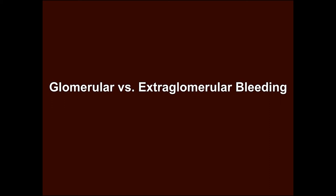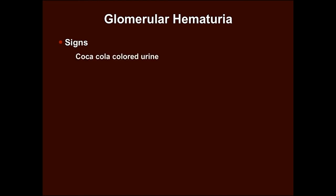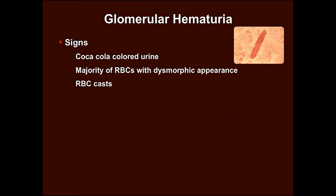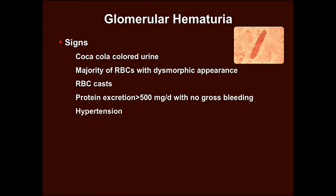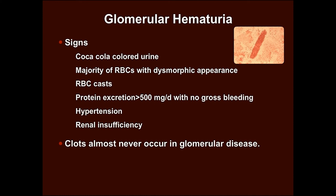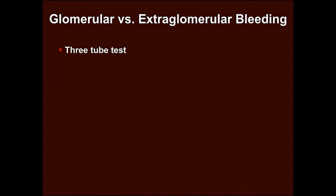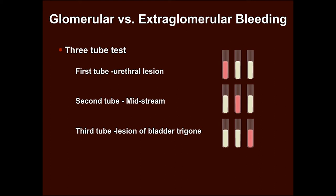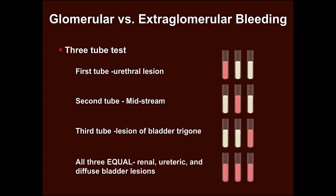It is important to decipher whether the bleeding is glomerular or extraglomerular. Signs that indicate glomerular hematuria are: presence of cola-colored urine, majority of RBCs showing dysmorphic appearance, presence of RBC cast, often associated with protein excretion with no gross bleeding, presence of hypertension or renal insufficiency. Blood clots almost never occur in glomerular disease. If you suspect glomerular hematuria, refer the patient to a nephrologist. A three-tube test may be useful: more bleeding in the first tube indicates a urethral lesion, the second tube suggests a midstream lesion, the third tube suggests a lesion of the bladder trigone. If all three show equal amounts, renal, ureteric and diffuse bladder lesions may be implicated.